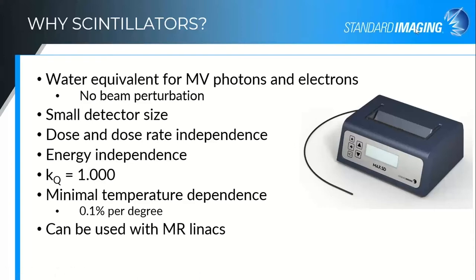The reason that scintillators are such an interesting detector right now is multifaceted. The crux of it is the water equivalence for megavoltage photons and electrons. As we're trying to meet the challenge of small field dosimetry — trying to get down to fields that really are comparable in size to the detectors we're using — the composition of the detector comes into play much more than it does with larger fields. Not perturbing the beam right there at the point of measurement becomes a huge advantage. The ability to make these detectors small so we can get down into those really small fields is also an advantage of scintillators.